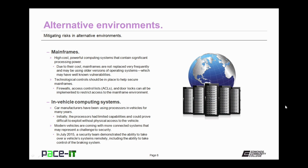Mainframes are high-cost, powerful computing systems that contain significant processing power. Due to their cost, mainframes are not replaced very frequently and may be using an older version of operating systems, which may have well-known vulnerabilities. Technological controls should be in place to help secure mainframes. Firewalls, access control lists, and door locks can all be implemented to restrict access to the mainframe environment.